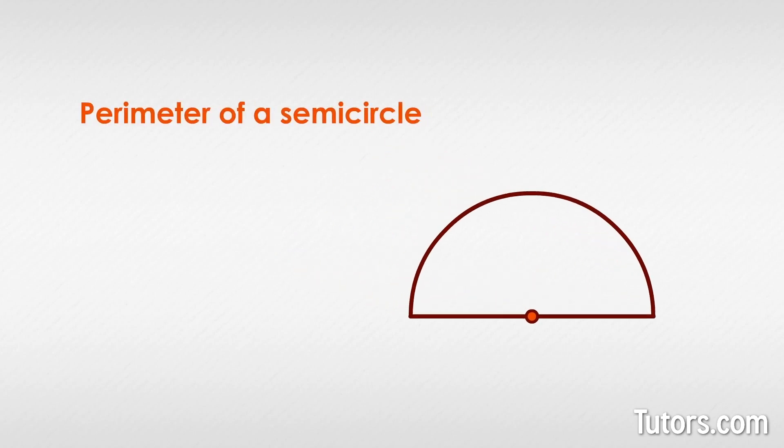The perimeter of a semicircle is half the original circle's circumference plus the diameter. Since the semicircle includes a straight side, its diameter, we cannot describe the distance around the shape as a circumference. It is a perimeter.